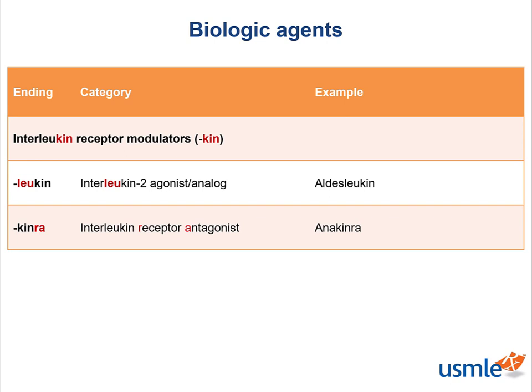The last category we'll talk about are the interleukin receptor modulators that conveniently have 'kin' in their name. They are agonists and antagonists of interleukin receptors. How can you tell whether it's an agonist or antagonist?